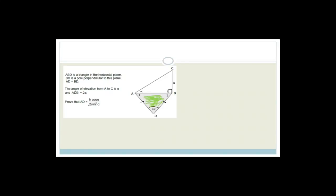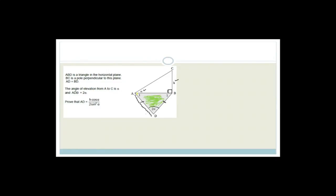It says prove that AD equals H cos alpha over 2 sine squared alpha. We need to get from triangle ABC into triangle ADB because that's the side we want — AD. My bridge is obviously AB.